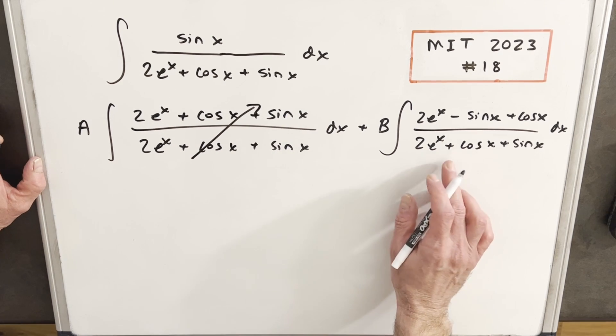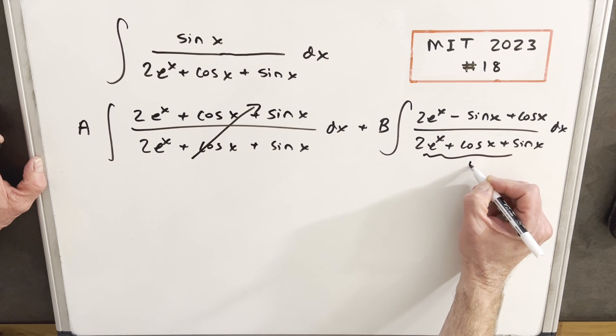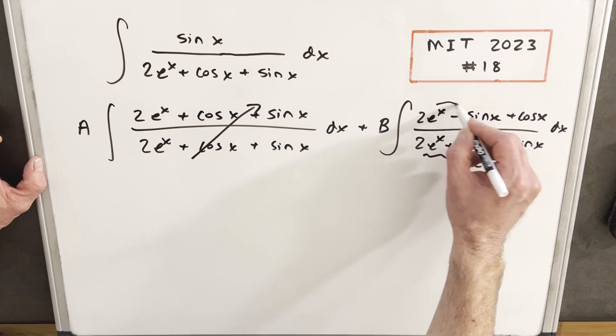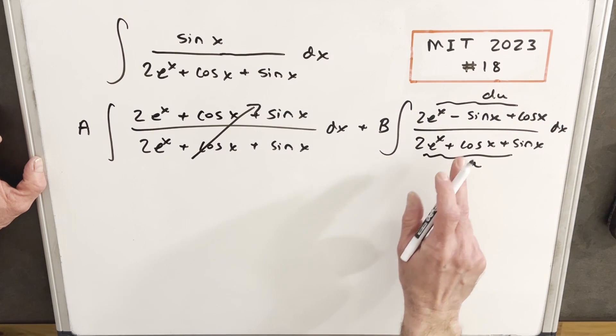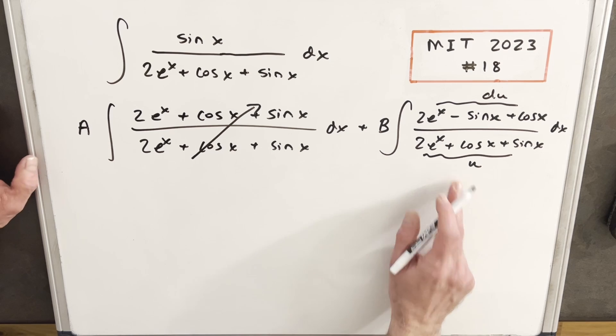Okay, and then my second integral, you'll notice if I did a u substitution with the denominator, we have du in the numerator. So I've set that up exactly how I want for an easy u substitution.